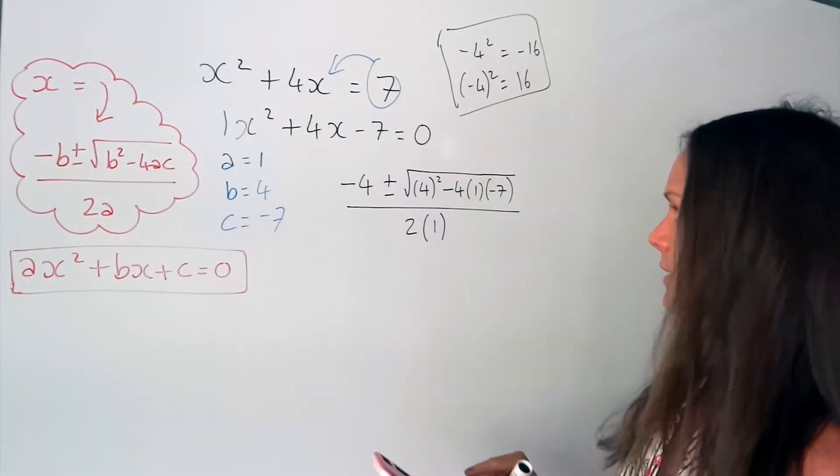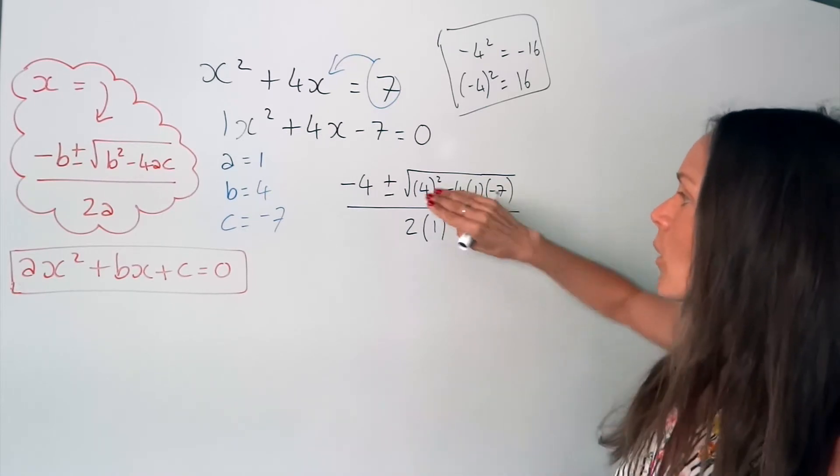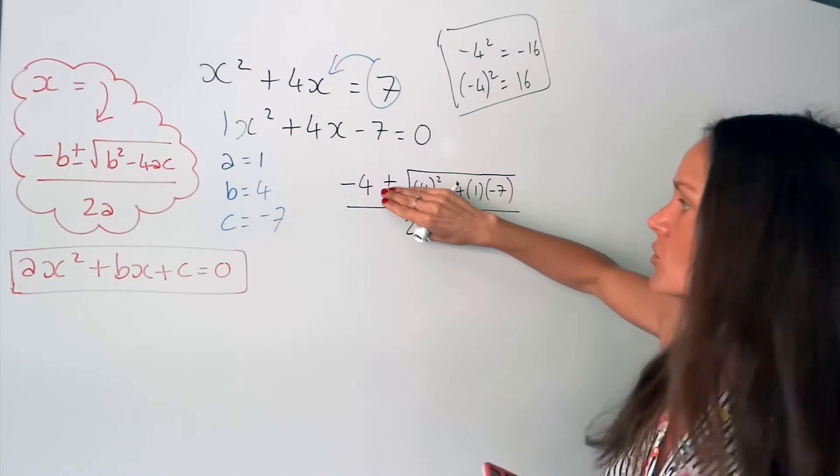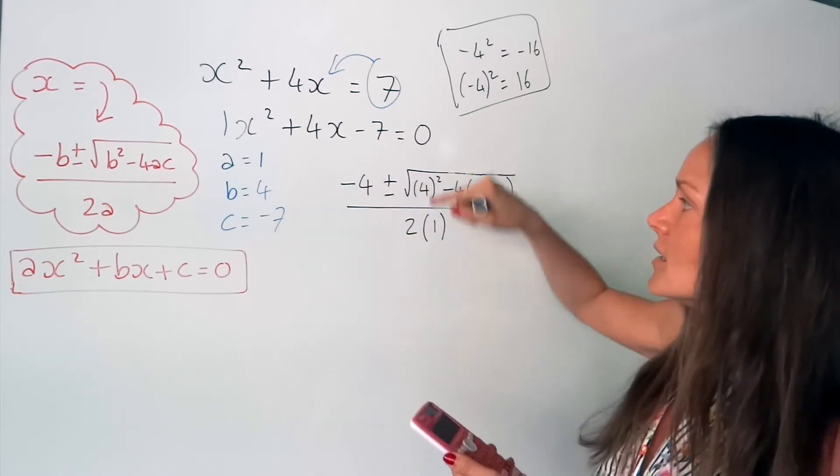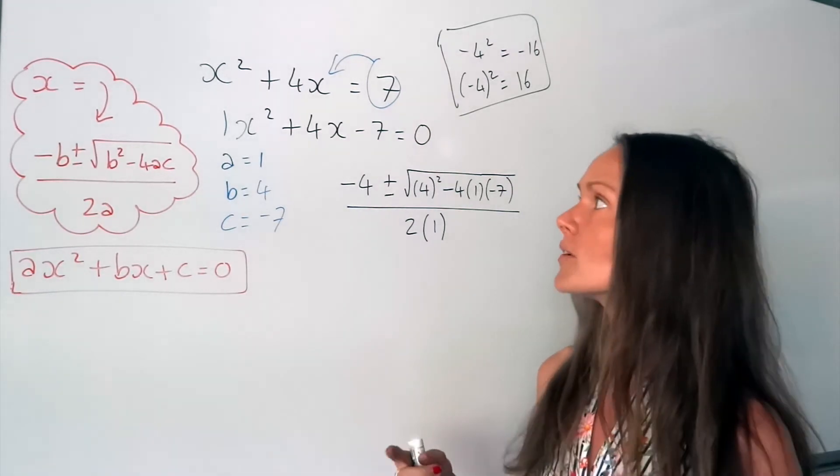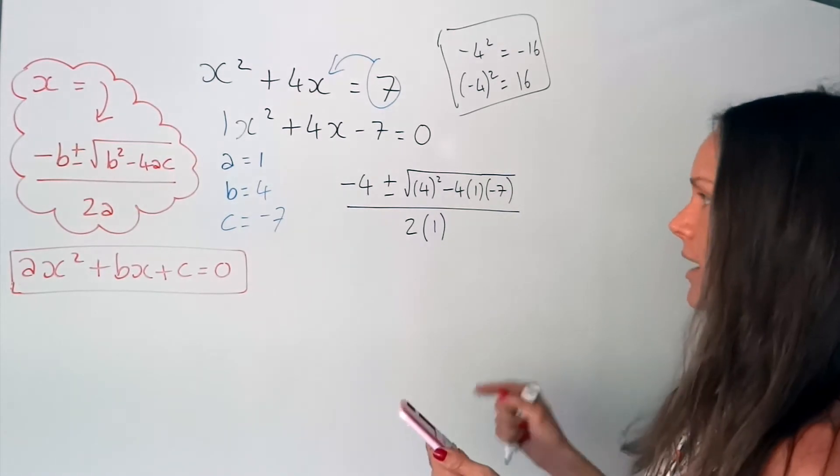So put that in your calculator. Press your fraction button, then type it all in. Once you do with plus, you press equals. You can keep it on your screen. Then you can go back, delete the plus and change it to a minus. Because remember, when you're solving a quadratic equation, there are two solutions. All right, so let's see what we get.